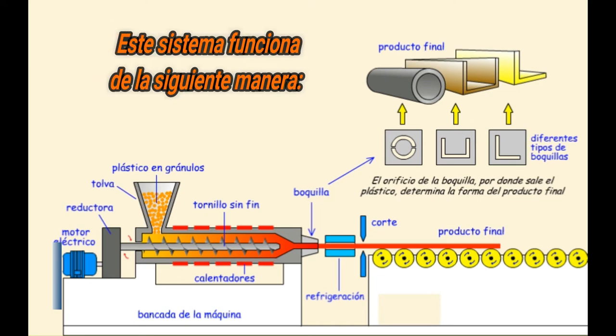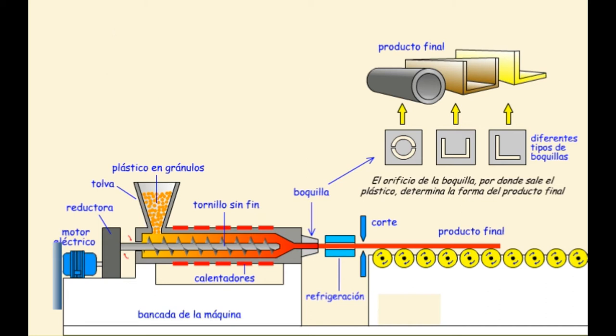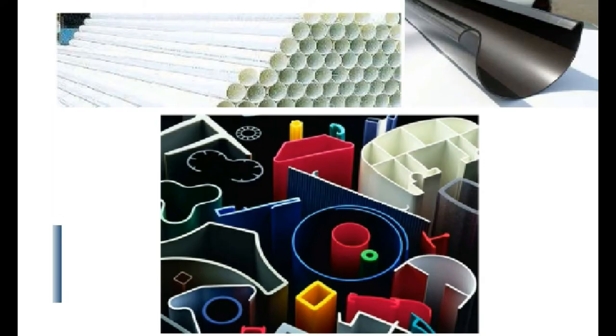Este sistema funciona de la siguiente manera: los gránulos de plástico entran en el sistema de alimentación. Estos pasan al tornillo sin fin mientras se van derritiendo a causa de las camisas calefactoras. Se van desplazando por el movimiento giratorio del tornillo hacia el cabezal, donde el material pasa a una boquilla que le da forma. Más tarde se refrigeran y obtienen su forma definitiva, resistente y rígida.